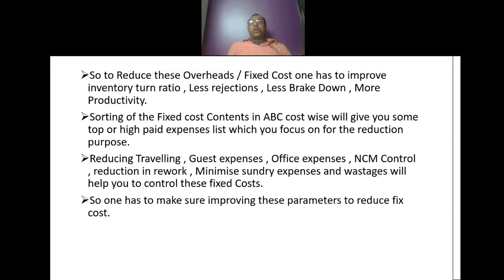To reduce overhead cost or fixed cost, one has to improve inventory turn ratio, achieve less rejection, less breakdown, and more productivity. Sorting fixed costs in ABC manner — ABC analysis — also helps in reducing fixed cost by eliminating the top expenses identified. Focus on those top expenses and try to reduce them. Reducing travelling or guest expenses, office expenses, NCM control, reduction in rework, minimizing sundry expenses and wastages will help in controlling your fixed cost.